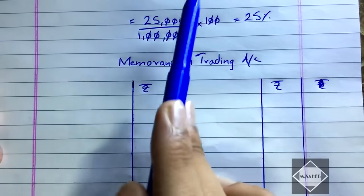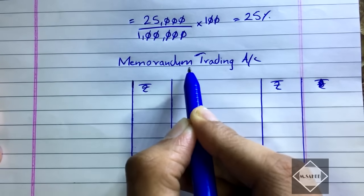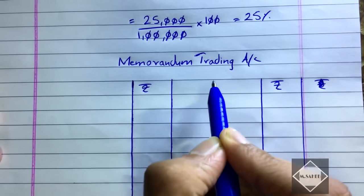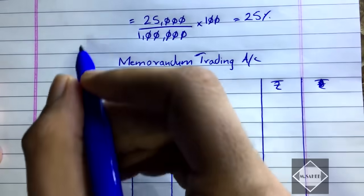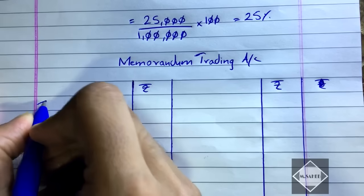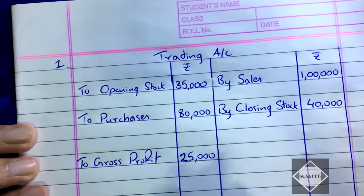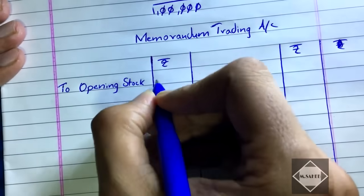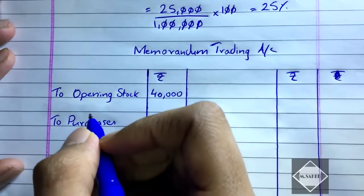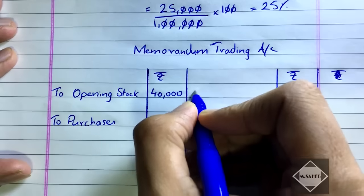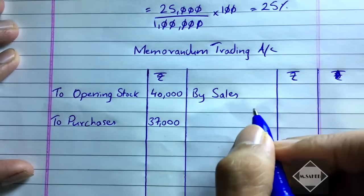After finding the GP rate, we open the memorandum trading account. This account is prepared to find closing stock on the date of fire. Opening stock: there is no separate opening stock given, so we take the previous closing stock of 40,000. Purchases till the date of fire are 37,000 on the debit side. Sales till the date of fire are 60,000 on the credit side.